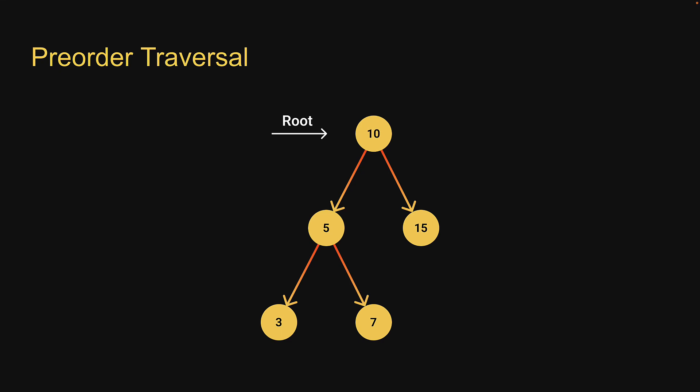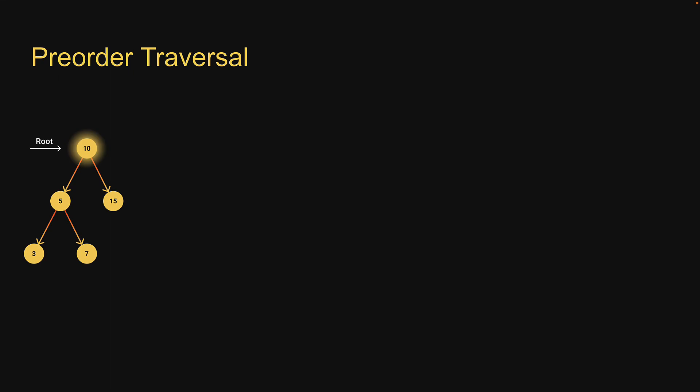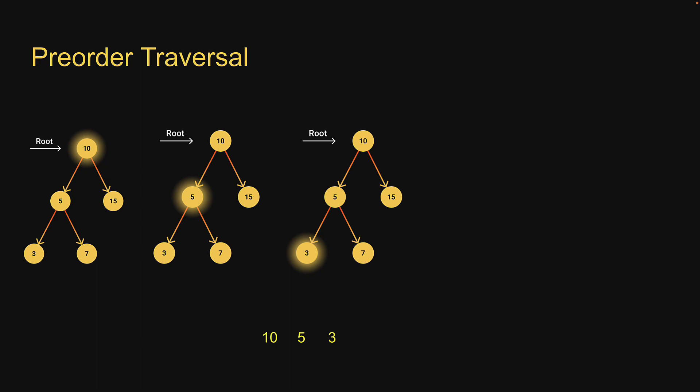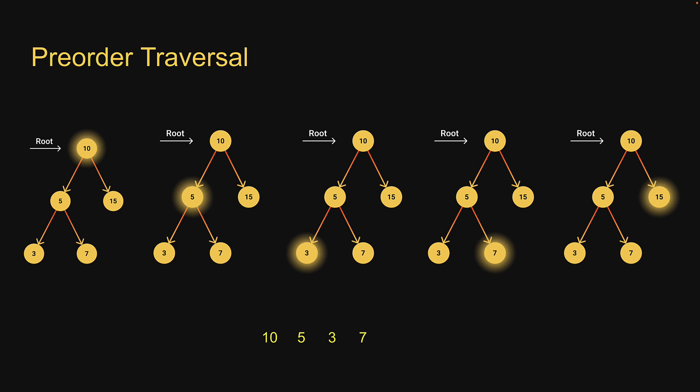We have a binary search tree with five nodes. Here is how pre-order traversal works. We start from the root node. Step 1: read the data of the node — we get 10. Step 2: visit the left subtree, so read the data of the left child, which is 5. Once again, visit the left subtree and read the data of the left child, which is 3. There is no further left subtree, so visit the right subtree of 5, which reads 7. The subtree with 5 as the root node is completely traversed. Go one level up and visit the right subtree of 10 — read the data and we get 15. All nodes have been visited, and 10, 5, 3, 7, and 15 is the pre-order traversal for our binary search tree.